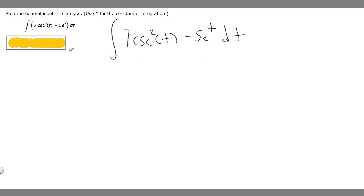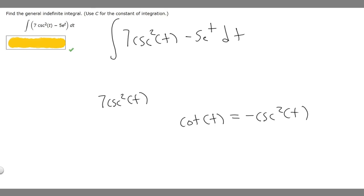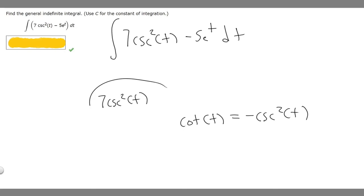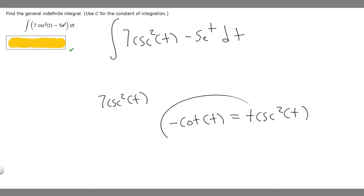What we need to do is find the antiderivative of our function. We know that the derivative of the cotangent of t is going to be minus cosecant squared of t. So the antiderivative of minus cosecant squared is going to be cotangent. But in this case we have it positive, so the antiderivative of positive cosecant squared of t is going to be minus cotangent of t.